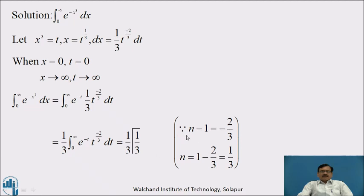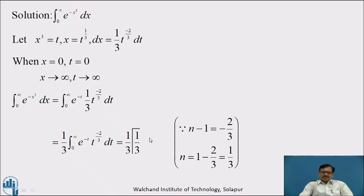Comparing with the definition of the Gamma Function, n minus 1 is equal to minus 2 by 3. Therefore, n is equal to 1 minus 2 by 3, that is, 1 by 3. Therefore, the value of the given integral is 1 by 3 into Gamma of 1 by 3.